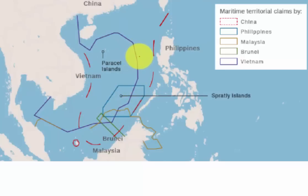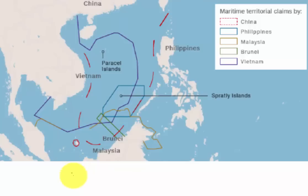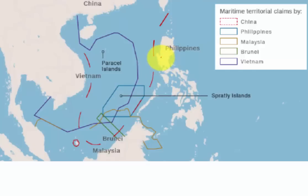The South China Sea is basically a sea in the Pacific Ocean which extends from the Strait of Taiwan to the Strait of Karimati in the south, and in the west it extends to the Strait of Malacca, while in the east there is the Philippines, which has raised the issue in the international tribunal appointed by the UN.